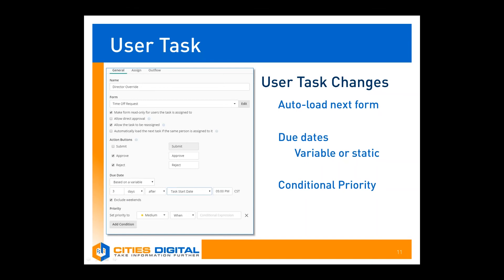Priority has always been a setting in Forms user tasks. It was originally its own tab, but now it's part of the general tab and is actually configurable based on conditions. A process creator can now identify a priority level based on field values in the form — for example, a dollar amount could put this at a higher priority, or you could use an end date or expiration date to define priority as well.